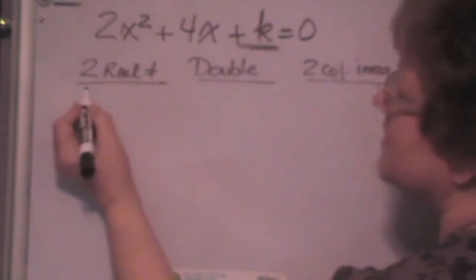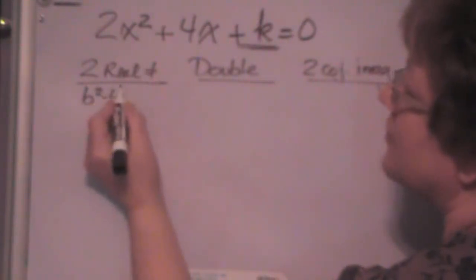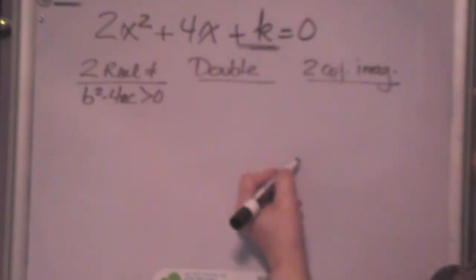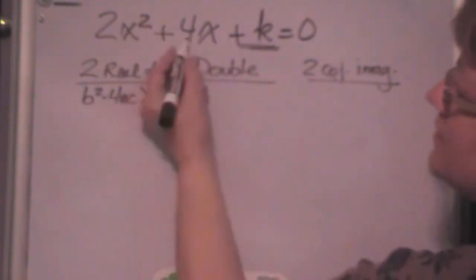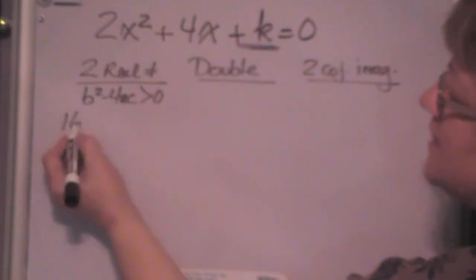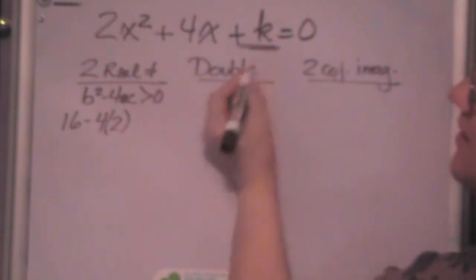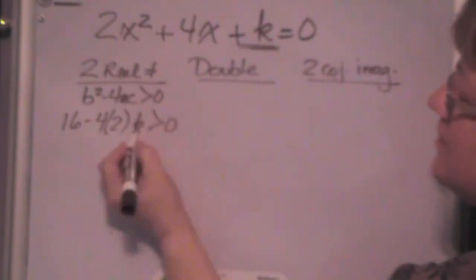Well, if I get two real unequal roots that means that b squared minus 4ac, our discriminant, it's got to be greater than zero. Well, figure it out. b squared is 4 squared, 16 minus 4 times a which is 2 times c which is k is greater than zero.